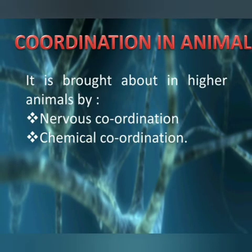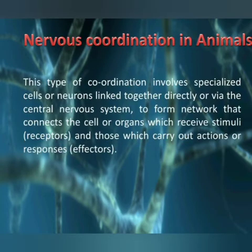Animals' coordination is two ways: one is nervous coordination and one is chemical coordination. Nervous coordination involves the nervous system, and chemical coordination involves hormones. Today's topic is nervous coordination — we will discuss how nervous coordination works in animals.